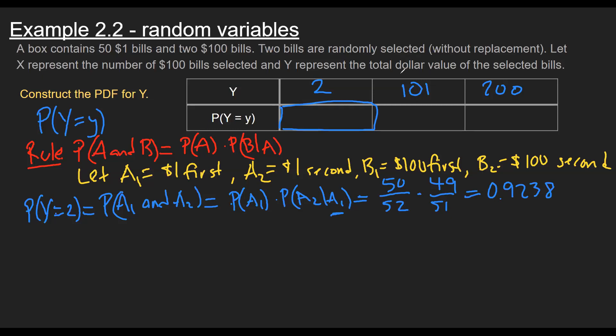And intuitively, if you multiply this together, the number makes sense, right? Almost all of the bills in the box are $1 bills, so the chance that I draw two of them should be pretty high. So that's 0.9238. Now, for the next one, I want, well, what's the chance I get 101? Well, that means I have one of each bill. So the first one is a 1, and the second one is 100.